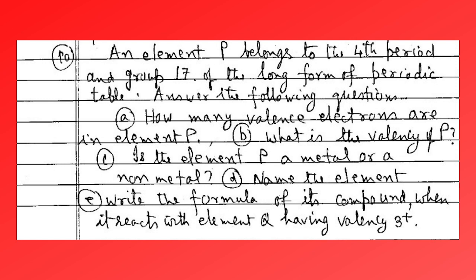An element P belongs to the fourth period and group 17 of the long form of the periodic table. Answer the following: (A) how many valence electrons are in element P? (B) What is the valence of P? (C) Is element P a metal or a non-metal? (D) Name the element. (E) Write the formula of its compound when it reacts with element Q having valence C3+.